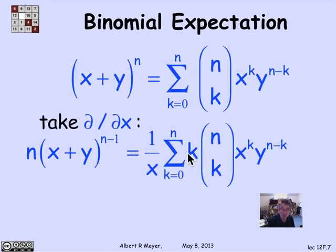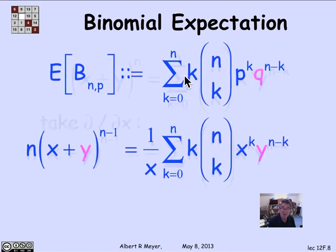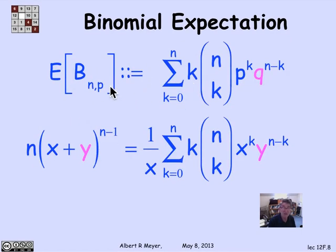So by differentiating the binomial formula, we get the following formula for this sum that is starting to look just like the expectation of BNP: 1 over x times the sum from k equals 0 to n of k times n choose k, x to the k, y to the n minus k. Well, let's compare the two terms. So here's this term, there's this one. And I'm going to replace this line by the formula for expectation of the binomial random variable. So this is what we're trying to evaluate, and I have this great theorem. You can see how they match up. So what I'm going to do is replace x and y in this general formula that I got by differentiating the binomial theorem with p and q.